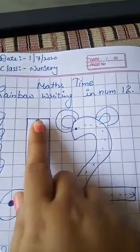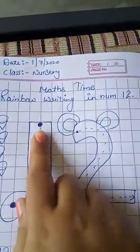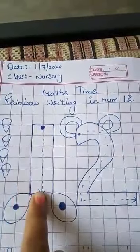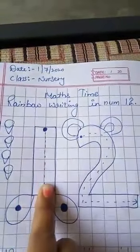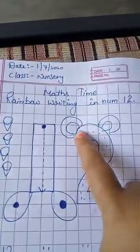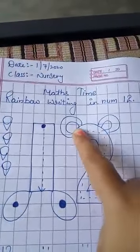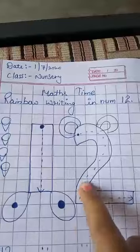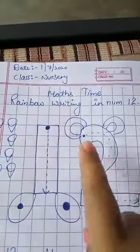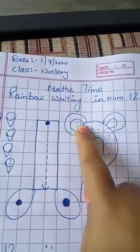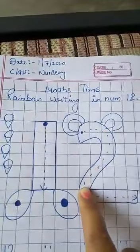You will take different colors and do rainbow writing in this. Now see. Keep your finger here and trace like this.